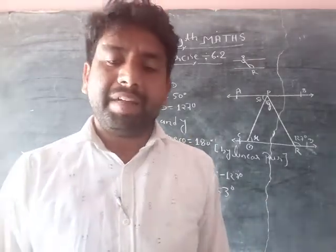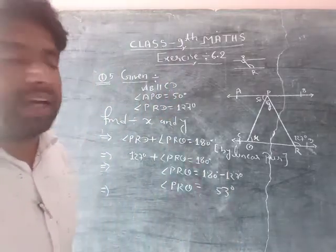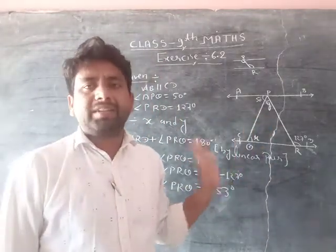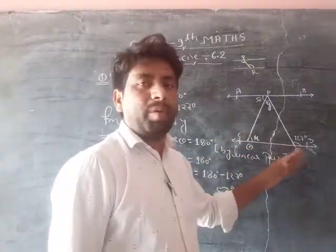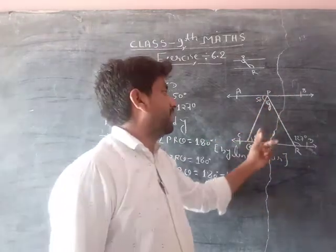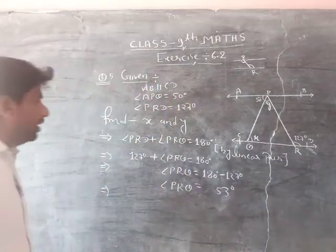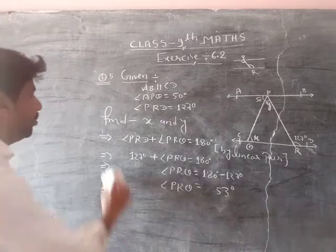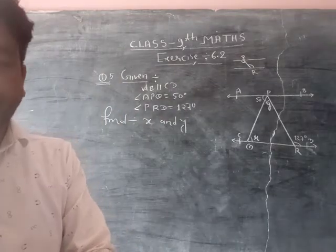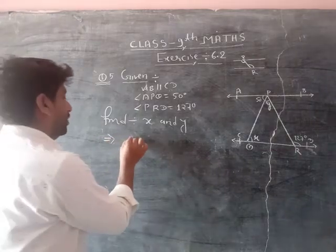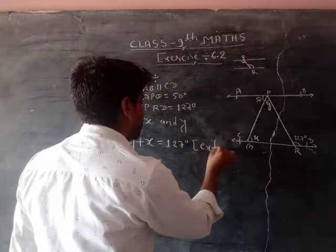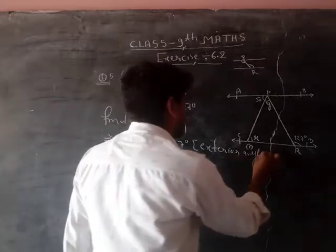Triangle sum property, or exterior. See, two things happen. There are two concepts that I am going to do. Now we will see, here, 50 plus x equals to 127 degrees by exterior angle property.